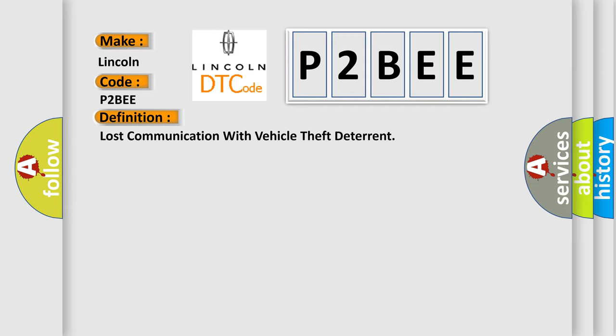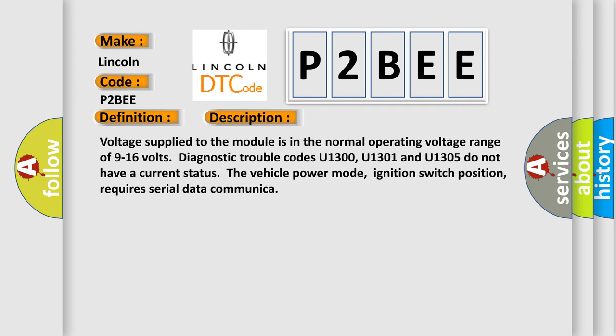And now this is a short description of this DTC code. Voltage supplied to the module is in the normal operating voltage range of 9 to 16 volts. Diagnostic trouble codes U1300, U1301, and U1305 do not have a current status. The vehicle power mode, ignition switch position, requires serial data communication.